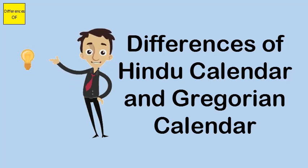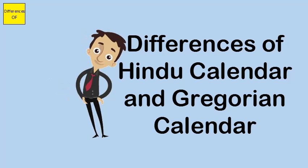The Hindu calendar speaks of six seasons — monsoon and dewy seasons in addition to the four seasons of the Gregorian calendar.